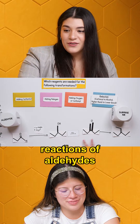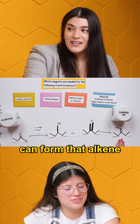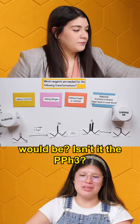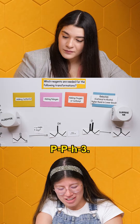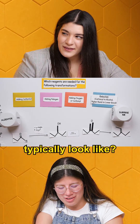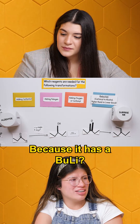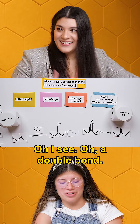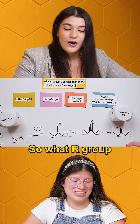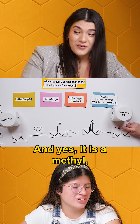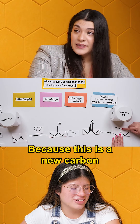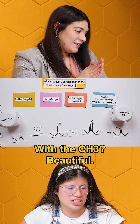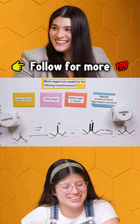Now that we have the ketone, reactions of aldehydes and ketones can form that alkene using our Wittig reaction. What are the reagents? It's PPh3 — and the ylide has a double bond to the R group we're adding. The new carbon being introduced gives us double bond CH with the CH3. That's what it is — and you did it.